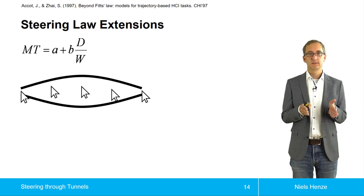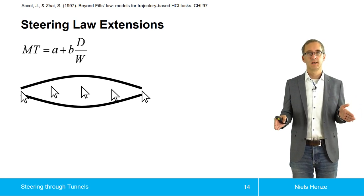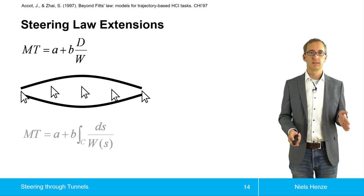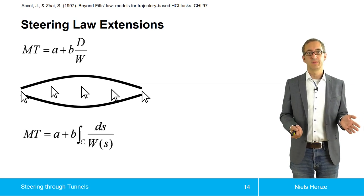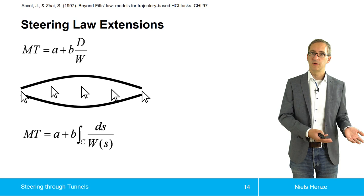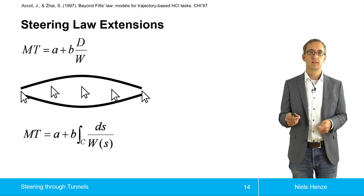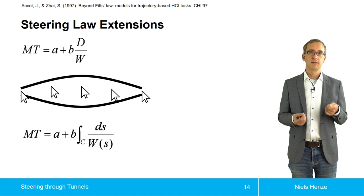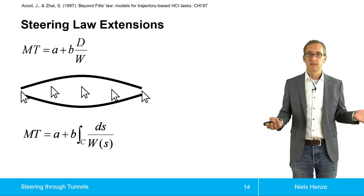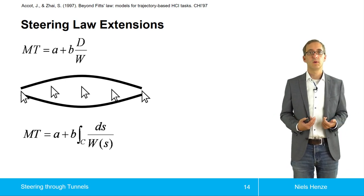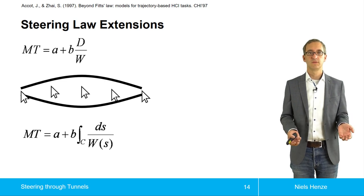And if we consider more and more points, we can end up with an integral. And that's exactly what's been done. You have movement time, you have A and B, and then you know for each point of the tunnel how wide it actually is. And then if you take the integral, you can come up with results for all kinds of different tunnels.